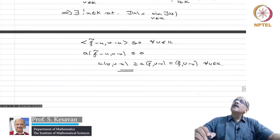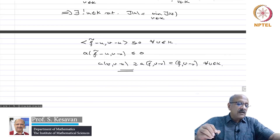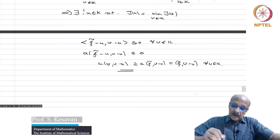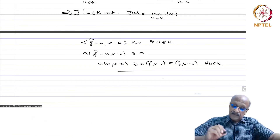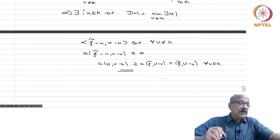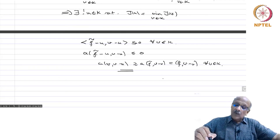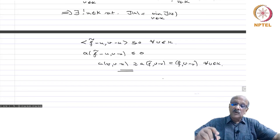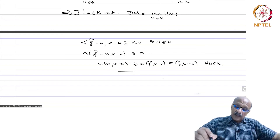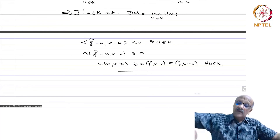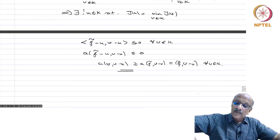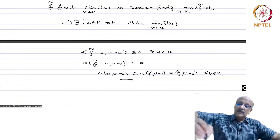We will now see that we can actually relax the symmetry condition — symmetry is not really needed. We needed it to interpret the solution as a minimization problem, but the inequality will always have a solution even without symmetry. That is the next theorem we are going to show.